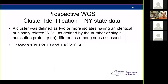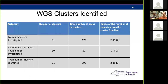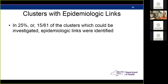An example from New York State, which used prospective whole genome sequencing to identify clusters — specifically for Salmonella enteritidis. There were a total of 61 clusters identified, with 10 clusters that could not be investigated. You can see most of these are very small clusters — a median of two cases in a cluster. A number of them could be travel-associated. For 25% of the clusters that could be investigated, epidemiologic links were identified.